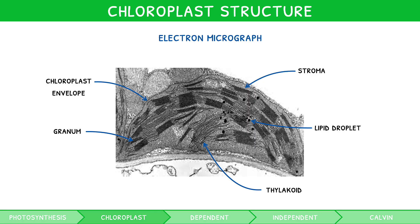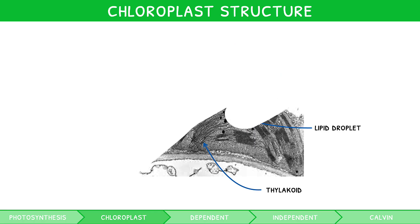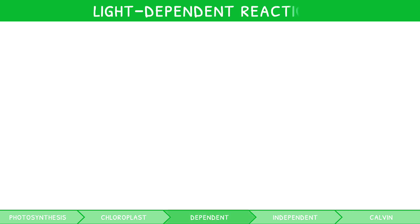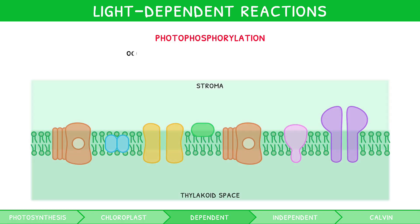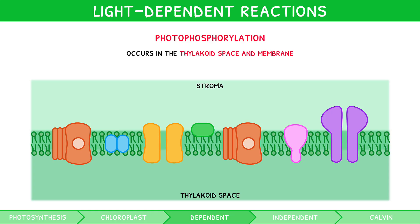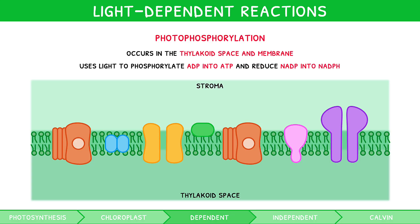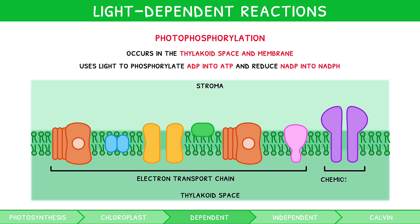So now that you understand the structure, let's cover what processes chloroplasts conduct, starting with the light-dependent reactions. The light-dependent reactions, also called photophosphorylation, take place in and across the thylakoid space and membrane. Like their name implies, they use light to phosphorylate ADP into ATP and reduce NADP into NADPH, used in the subsequent light-independent reactions. Like in the mitochondria, it is subdivided into the electron transport chain and chemiosmosis.